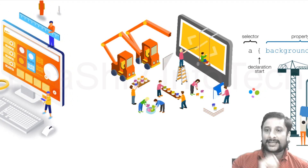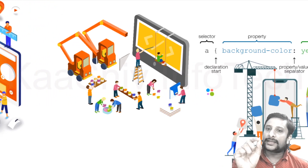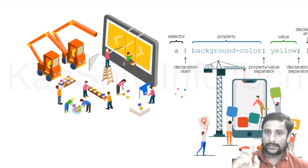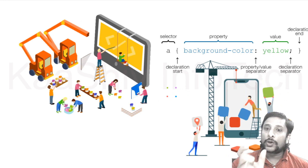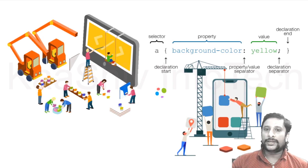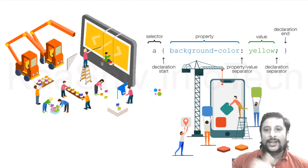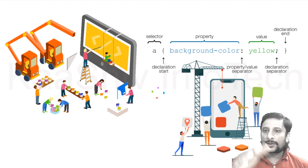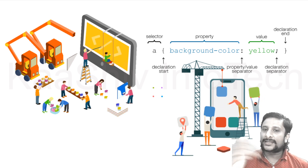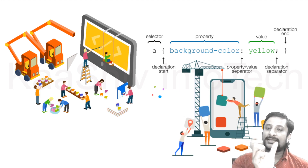Anchor - and it is a selector. On a brace, it will start a declaration. There is an anchor tag, and there is a background color which is yellow. It shows the background color which is yellow. It is a property in the background color, and the value is yellow. The property is separated by a property-value separator. Declaration separator and declaration end - this is a CSS style defined.